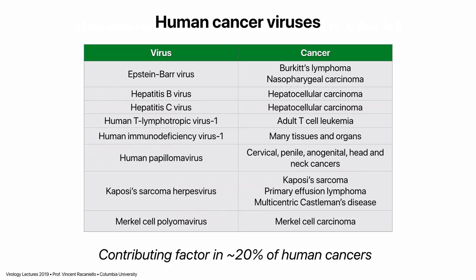Viruses are thought to be the contributing factor in about 20% of human cancers. The main viruses that do this include herpes viruses — Epstein-Barr virus and Kaposi's sarcoma herpes virus — some hepatitis viruses, a few retroviruses, papillomavirus, and polyomavirus. These are the cancers they cause. We're not going to talk about any of these specific cancers today because they all have different mechanisms. What I want to do today is talk about how we learned how cells become transformed and lead to cancer.